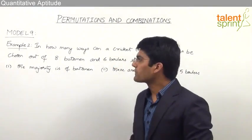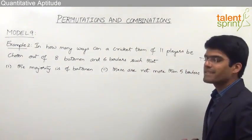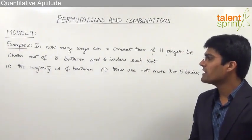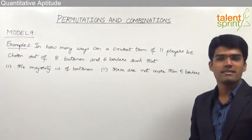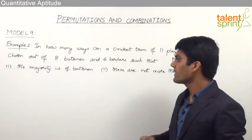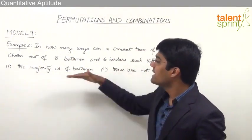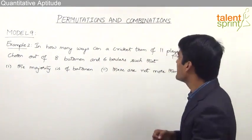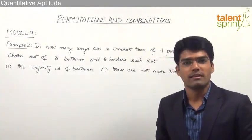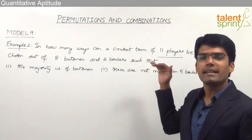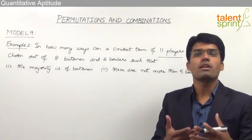Let us now take the second example from Model 9. In how many ways can a cricket team of 11 players be chosen out of 8 batsmen and 6 bowlers such that the majority is of batsmen? Out of 11 players, majority have to be batsmen. The minimum majority in a team of 11 would be 6 — so if there are 6 batsmen and 5 bowlers, more batsmen are present.